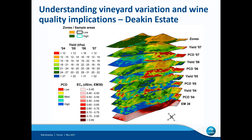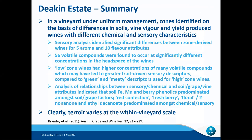In a subsequent project, there were also some commercial scale wines produced from these zones. What emerged was that in this vineyard — which is under uniform management — the zones identified on the basis of differences in soils, vine vigour and yield produced wines with quite markedly different chemical and sensory characteristics. Sensory analysis identified significant differences between the zone-derived wines for a number of aroma and flavour attributes. Paul Boss analysed the volatile compounds in the headspaces of wines from the two zones and found significantly different concentrations in 56 of those different volatile compounds. The low zone wines had higher concentrations of many compounds, leading to more fruit-driven sensory descriptors compared to the greener and more meaty descriptors used for the high zone wines.